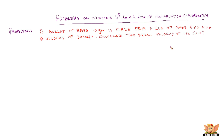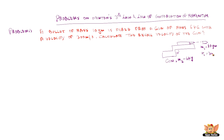Let us see the data given pictorially. There is a gun of mass 6 kg — let us call this M2 — and a bullet of mass 10 grams. The bullet is fired and moving at a velocity of 300 meters per second. We need to find out what is the recoil velocity, which is V2.